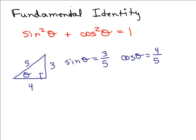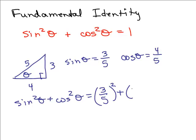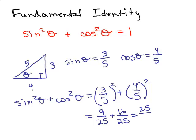And according to the fundamental identity, if I do sine squared theta plus cosine squared theta, it should equal 1. So let's just try that out. If I do sine squared theta plus cosine squared theta, in this particular problem, that's 3 fifths squared plus 4 fifths squared. So that's 9 twenty-fifths plus 16 twenty-fifths, which is 25 twenty-fifths, which does equal 1. So we can see it checks out. And you could plug any other angle you want in for theta.